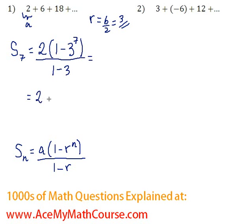So here we're going to get 2 times 1 minus, now 3 to the power of 7. I'm going to get 2 times, now 1 minus 2, so it's just negative 2187, all over negative 2.